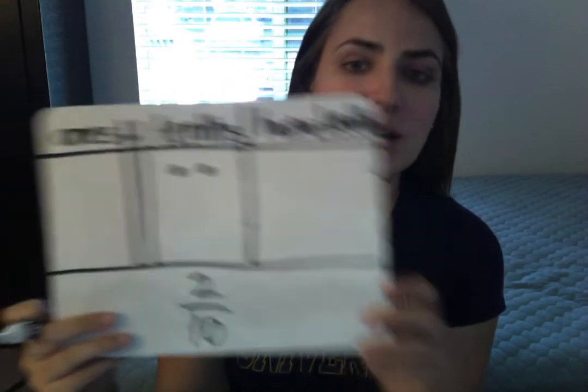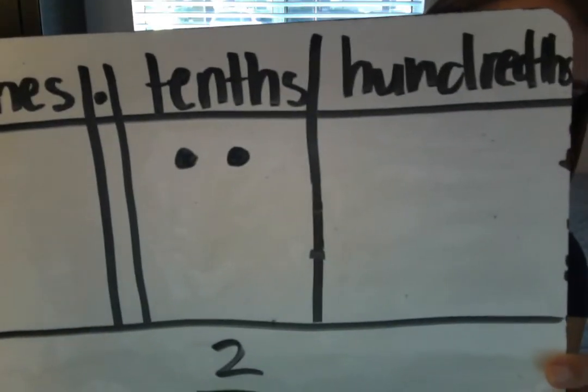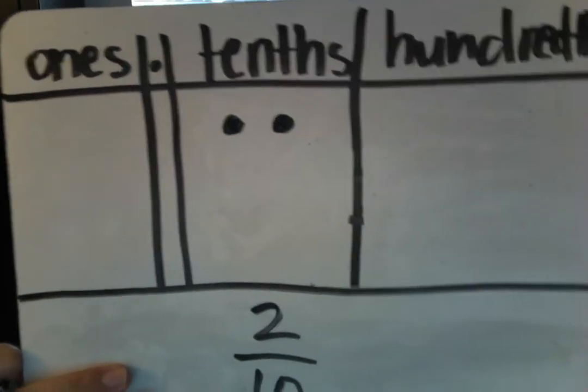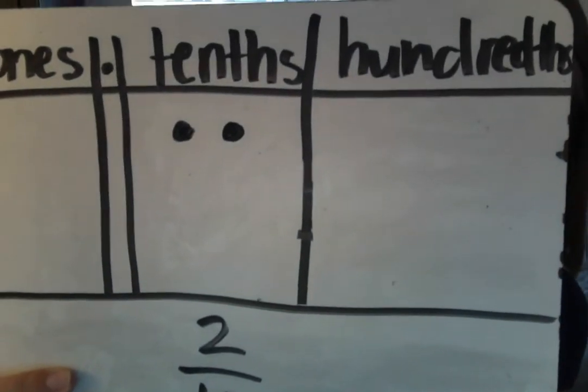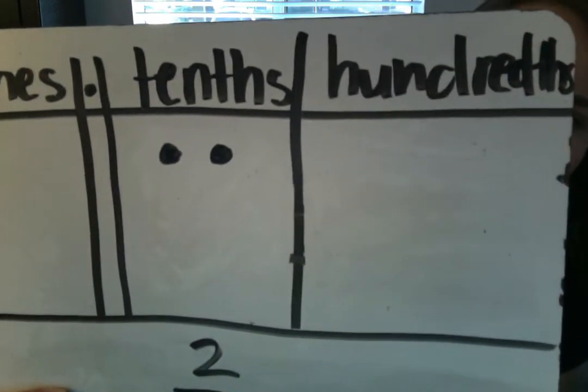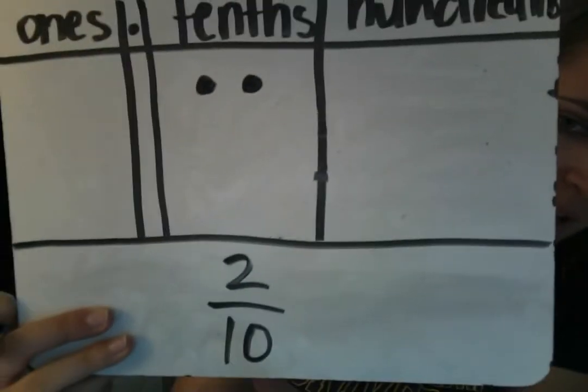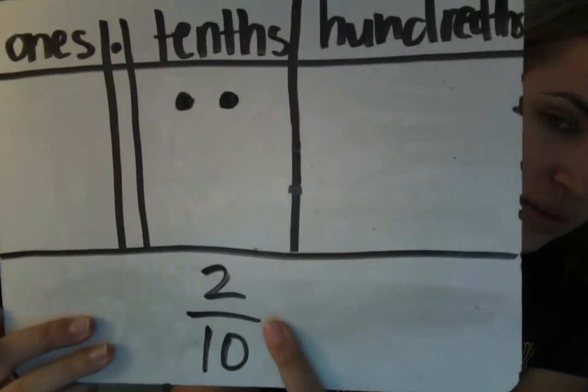So my question to you is: if I have two tenths — and I'm actually going to write it as a fraction as well — how many hundredths do I have? If I have two tenths, how many hundredths would I have? I want you to think about how we could use our place value chart to show how many hundredths is equivalent to two tenths.